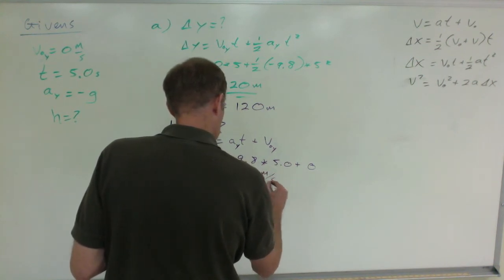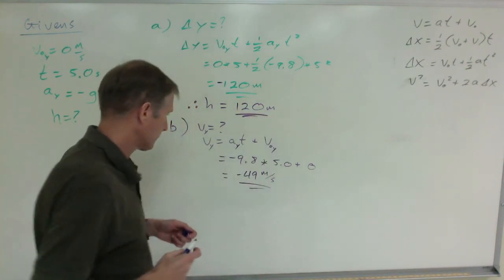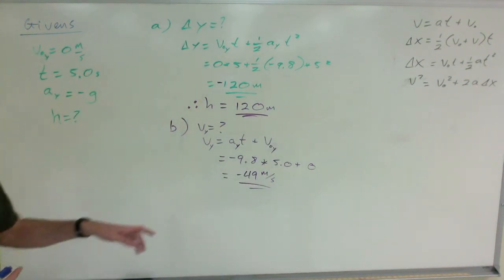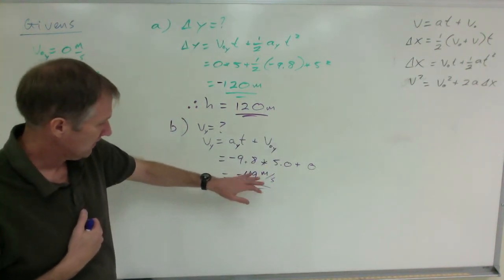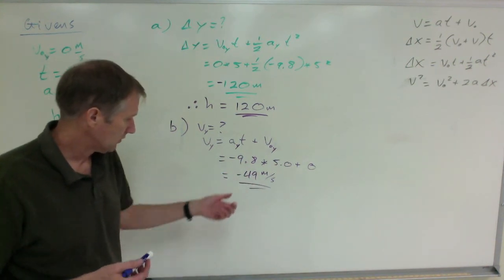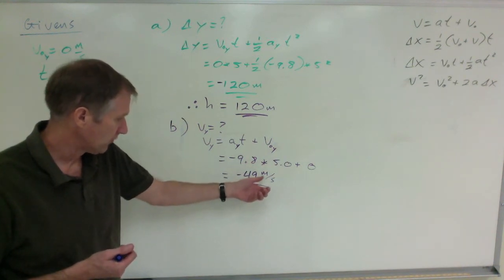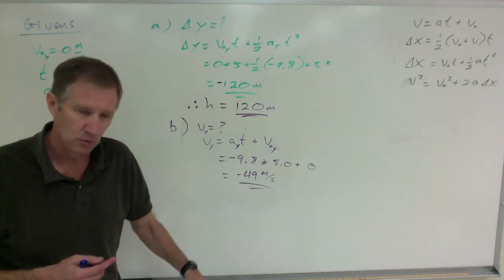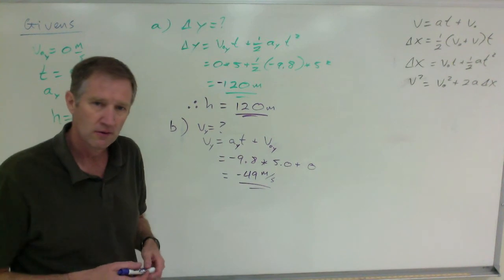That's its velocity. Its speed is 49 meters per second, its velocity is negative 49 meters per second. How fast is it going? 49 meters per second with direction downwards. The negative sign indicates down.